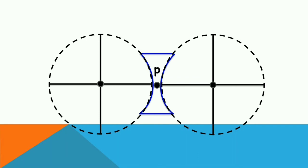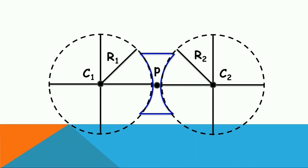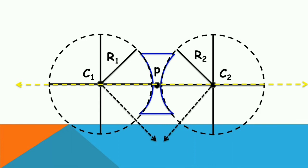C1 is the center of curvature related to surface one, and C2 is the center of curvature related to surface two. The left-hand side circle has the center C1 because it is related to the first curve, and the other is C2. They have corresponding radii of curvature R1 and R2. The axis passing through the centers of curvature and the pole is called the principal axis, and the lines drawn along the radius at a given point are called the normal N.